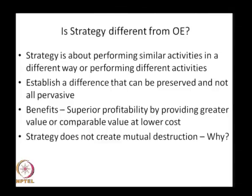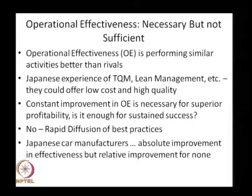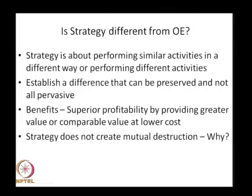As a result, the entire industry starts to imitate such activities and all of them end up at par. How then do companies differentiate and emerge from this crowd to distinctly stand out? That is when we need to talk about strategy. The fine line of difference: while operational effectiveness is performing similar activities better than rivals, strategy is about performing similar activities in a different way altogether, or even performing different activities.